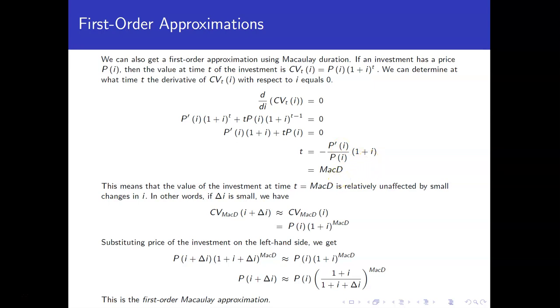So what that means is that the value of an investment at that time is not affected much by small changes in i. Because again, we have a horizontal tangent line at that point, if you think about it graphically. All right, so in particular, the current value at the Macaulay duration time, if I change the i slightly, should be about the same as the current value at that particular value of i, or just substituting what we said the current value was, that's the price times 1 plus i to the Macaulay duration time.